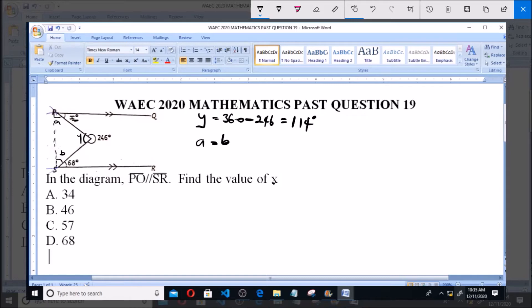Now since we have the value of y to be 114, it simply means that a plus b plus y is equals to 180. But like we know, a is equals to b, so we can simply say 2a plus y is equals to 180, sum of angles in a triangle.